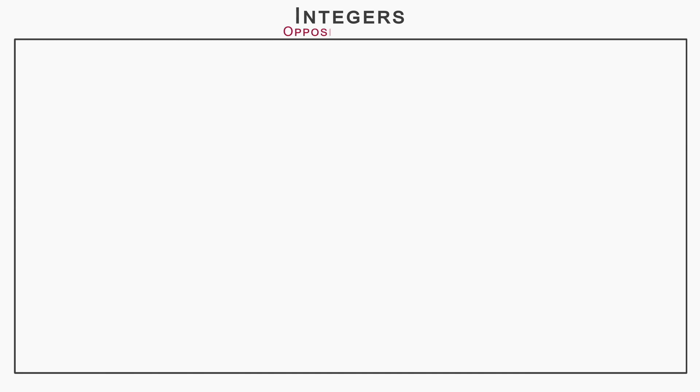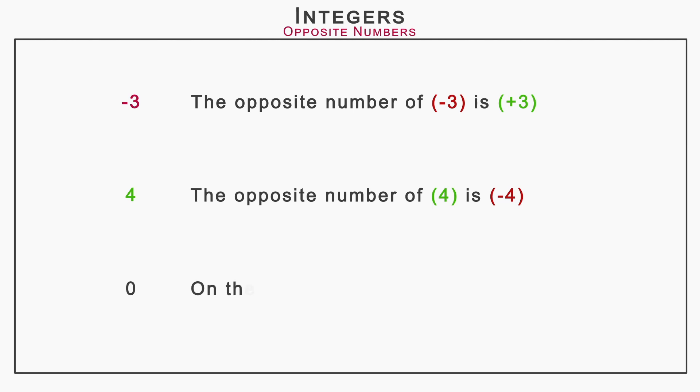Now we will learn opposite numbers. Take minus 3. The opposite of minus 3 is plus 3. Take one more number, 4. The opposite number of 4 is minus 4. Now let us take 0. On the number line, 0 has no opposite.